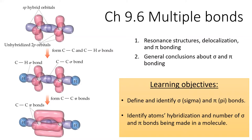Not only does hybridization explain the shapes of molecules, but it also explains the characteristics of single, double, and triple bonds, as well as the delocalization of electrons in resonance structures. In this lesson, we'll explore how hybridization affects covalent bonding.